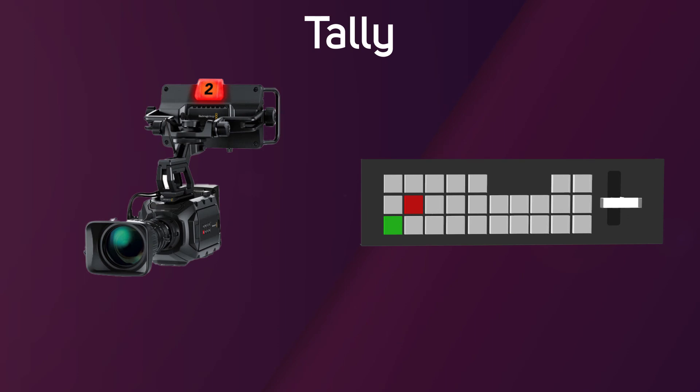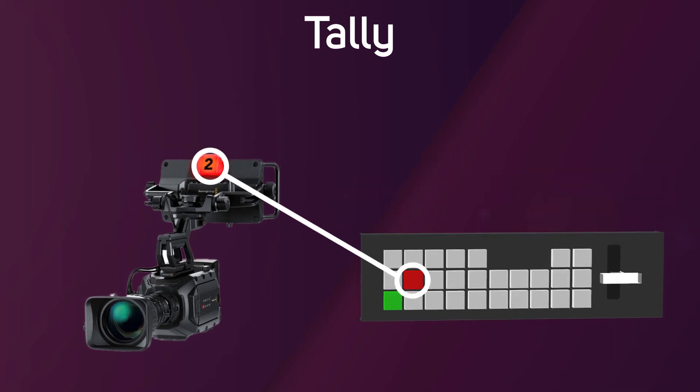Tally is a way to communicate which camera is live or on your program output at any given time. A red light, often atop the camera, indicates to the camera person and the talent that they are live, whilst the button that corresponds to that camera on the mixer will illuminate red to give the vision mixer a quick indication.